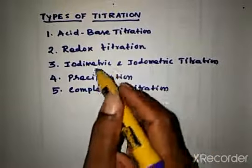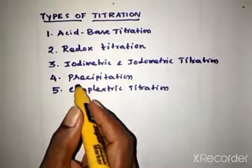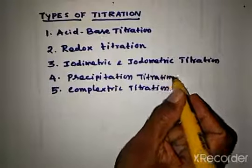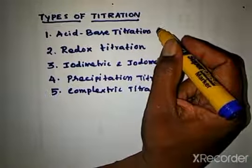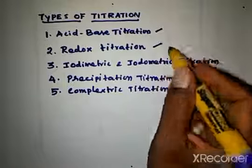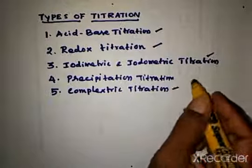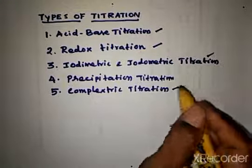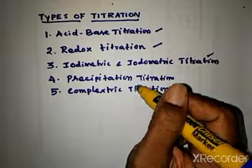We also have complexometric titration. So these are the types of titrations. In our syllabus we have acid-base titration, redox titration, iodometric and iodimetric titration, and complexometric titration — but not precipitation titration. We shall discuss these one by one.